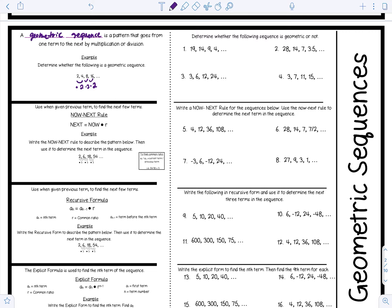We have some examples to the right: determine whether the following sequences are geometric or not. For number one, we go from 19 to 14, 14 to 9, 9 to 4 — that's subtracting 5 each time. By definition, is it going from one term to the next by multiplication or division? The answer is no, therefore this is not geometric.